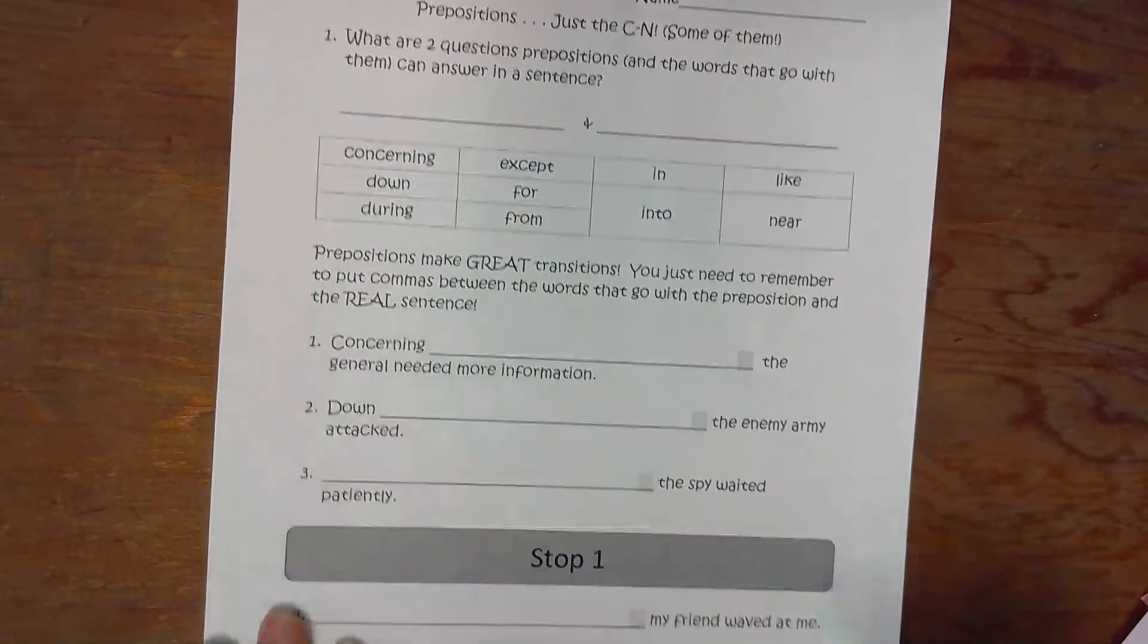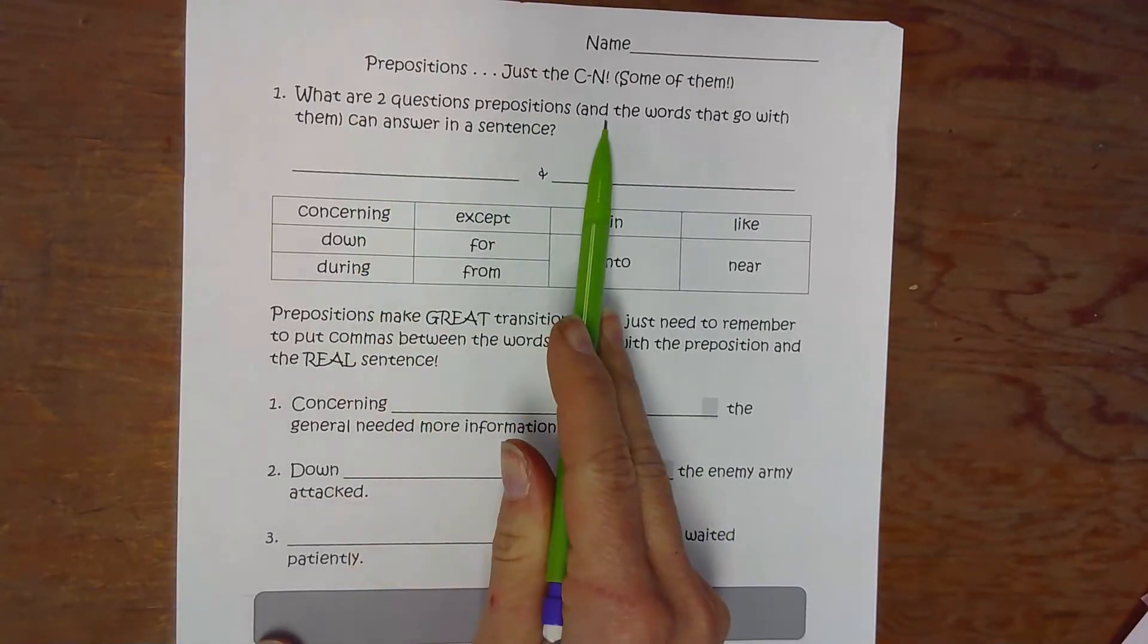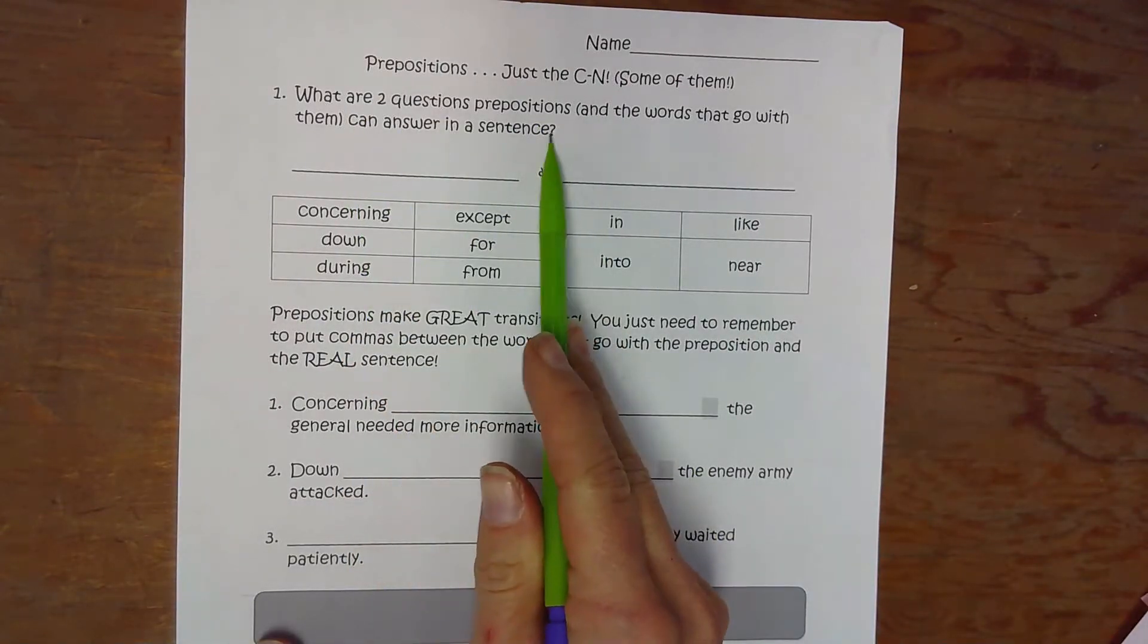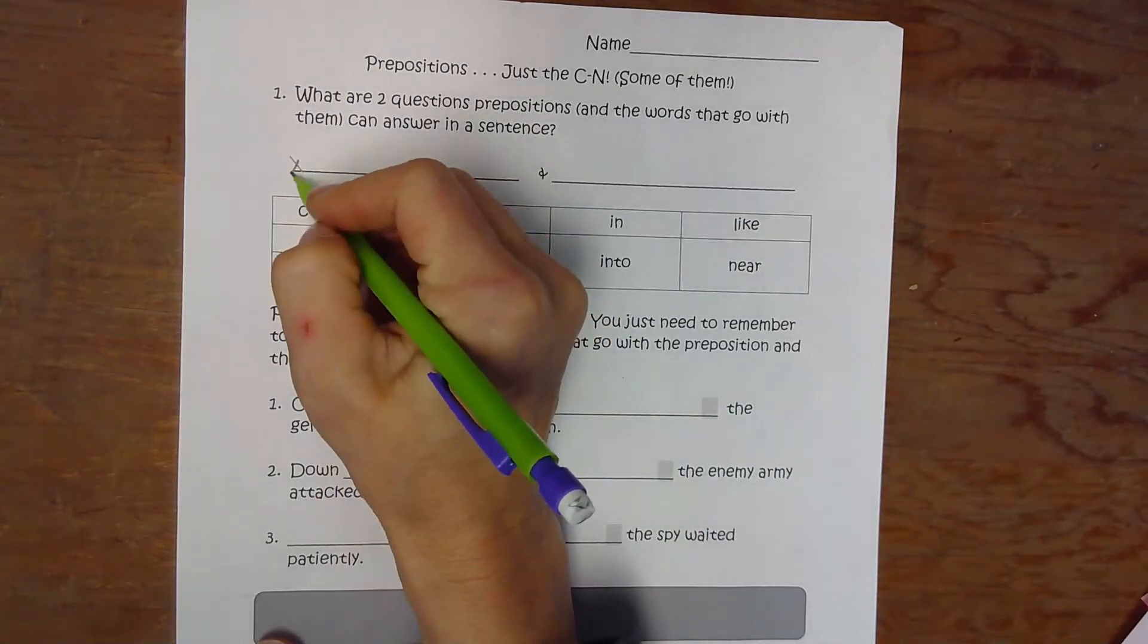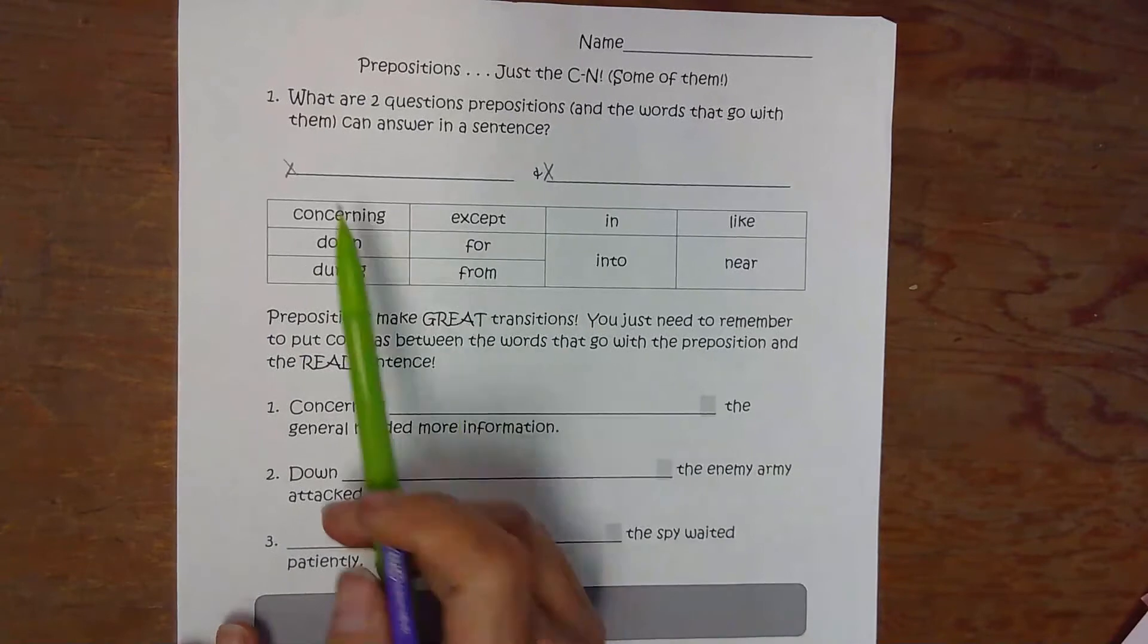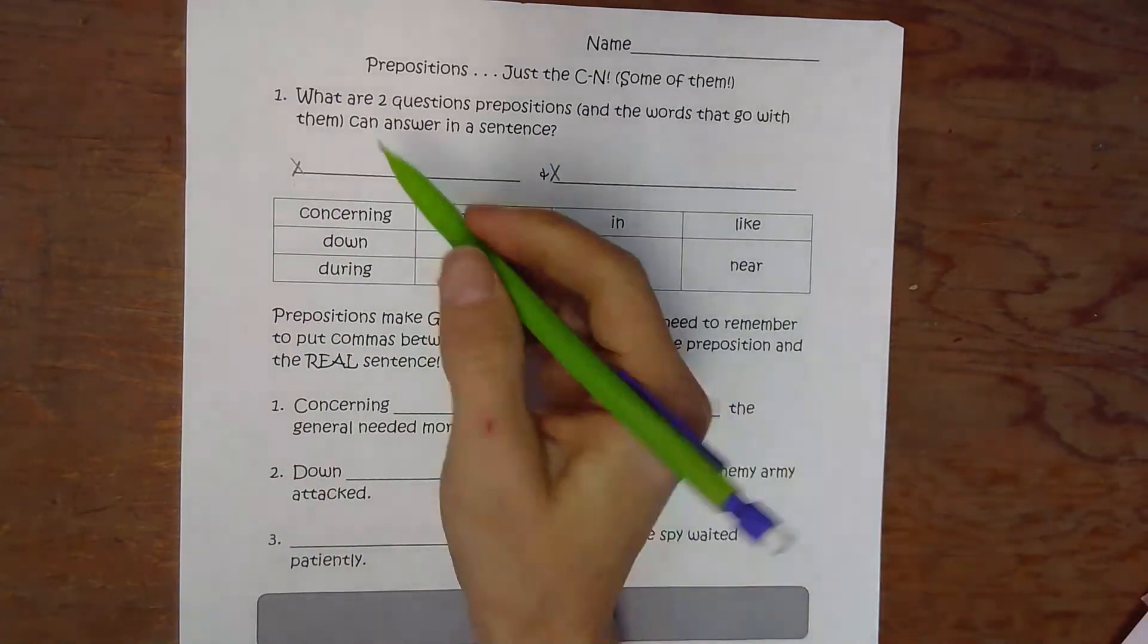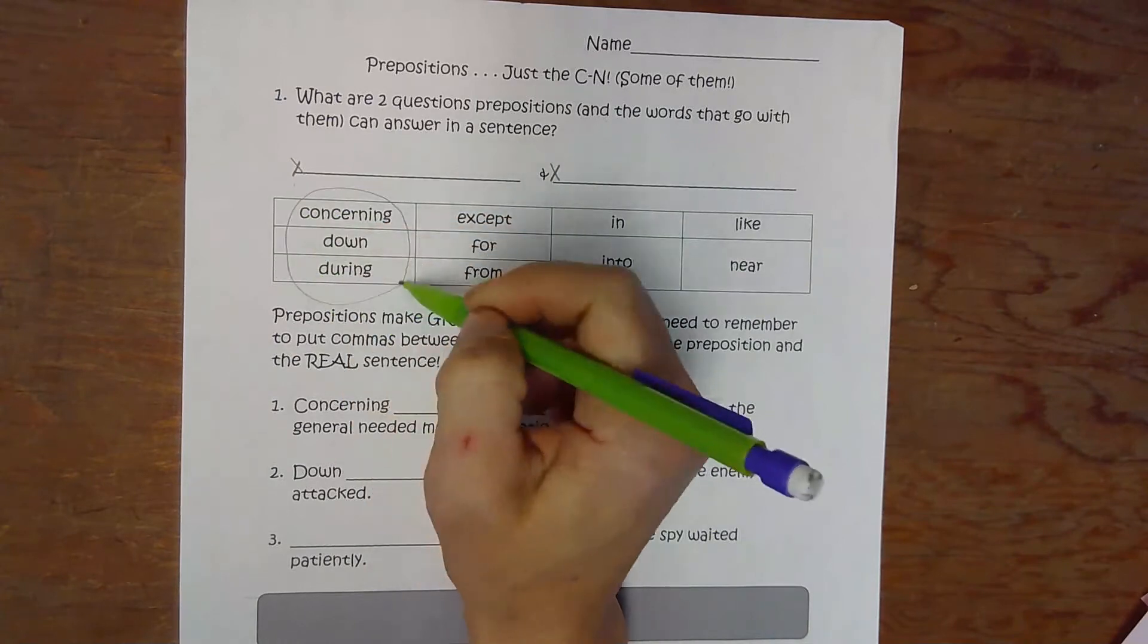We will do all the way down to where it says stop one for today. Two questions that prepositions and the words that go with them can answer in sentences. Don't forget to fill in these blanks—this is part of your score today. No, an X does not fill in the blank. Today we are working with concerning, down, during.